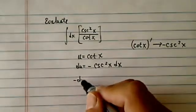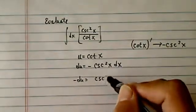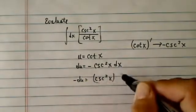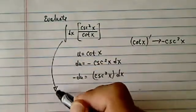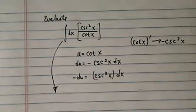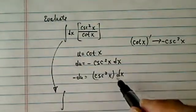Okay, so basically what we have is minus du equal to cosecant squared x and dx. Let's do the substitution. I always think of substitution kind of like the spy going undercover. dx here,